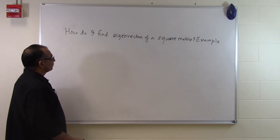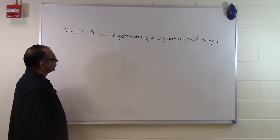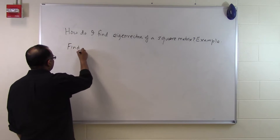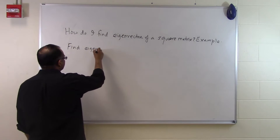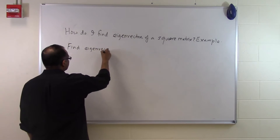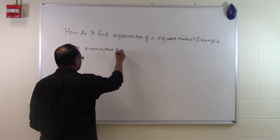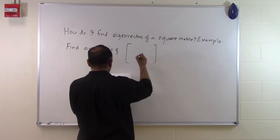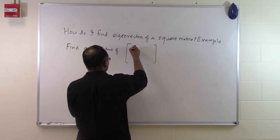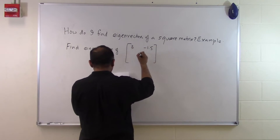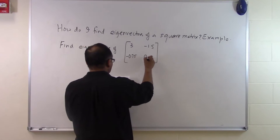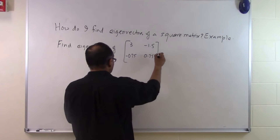In this segment, we will talk about how we can find eigenvectors of a square matrix. So let's suppose somebody says, find eigenvectors of this matrix right here: 3, minus 1.5, minus 0.75, plus 0.75.